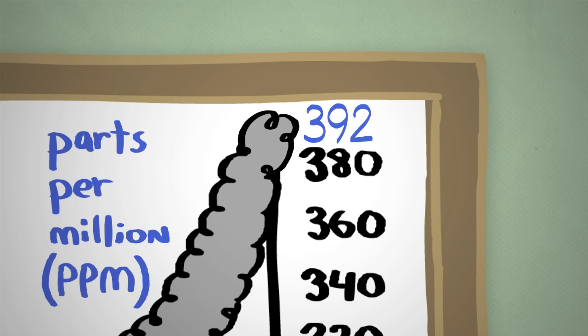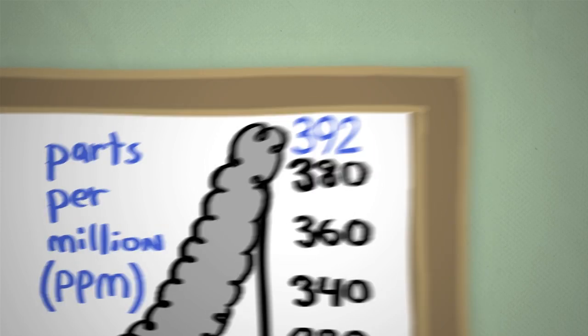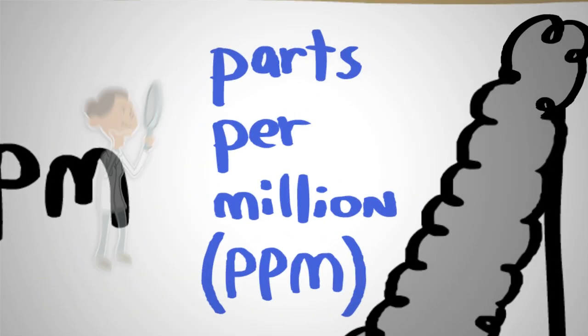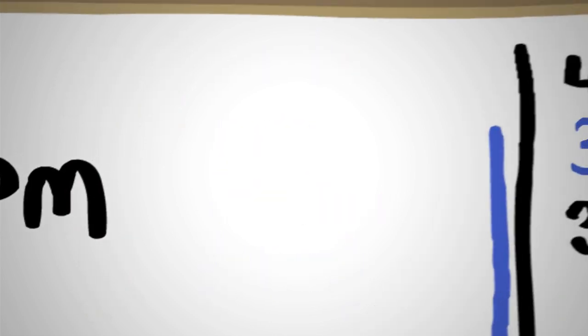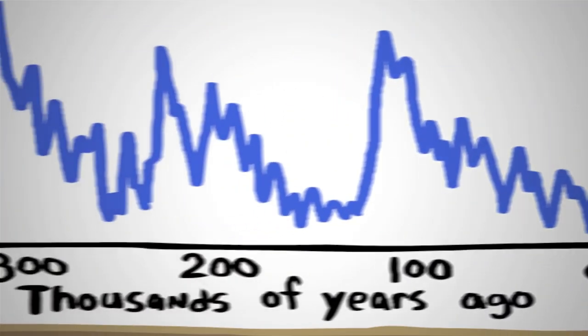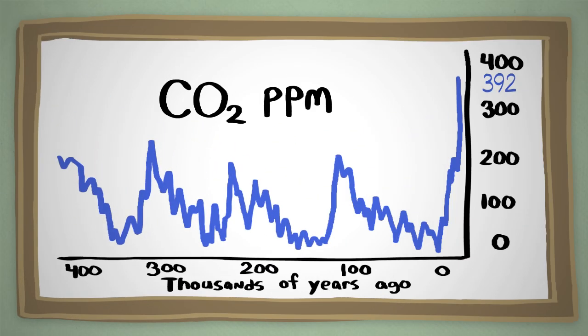Today it stands at 392 parts per million. Parts per million is a special measurement scientists use. 392 is way more carbon dioxide than we've had for many thousands of years, and the number continues to rise.